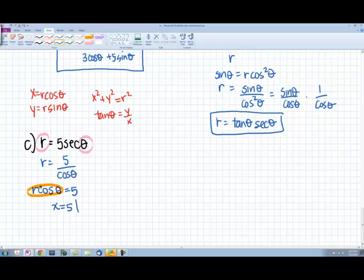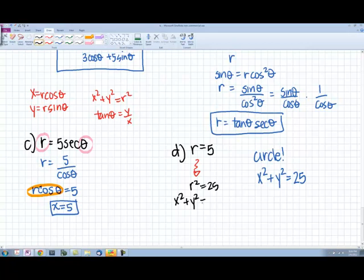r equals 5, this should be a circle. And circles have equations, x squared plus y squared equals r squared. And what is our radius? 5. So that makes it 25. Now, how else could we have done this? You could have squared both sides. r squared equals 25. And we know that x squared plus y squared equals r squared. So then we get the same equation.